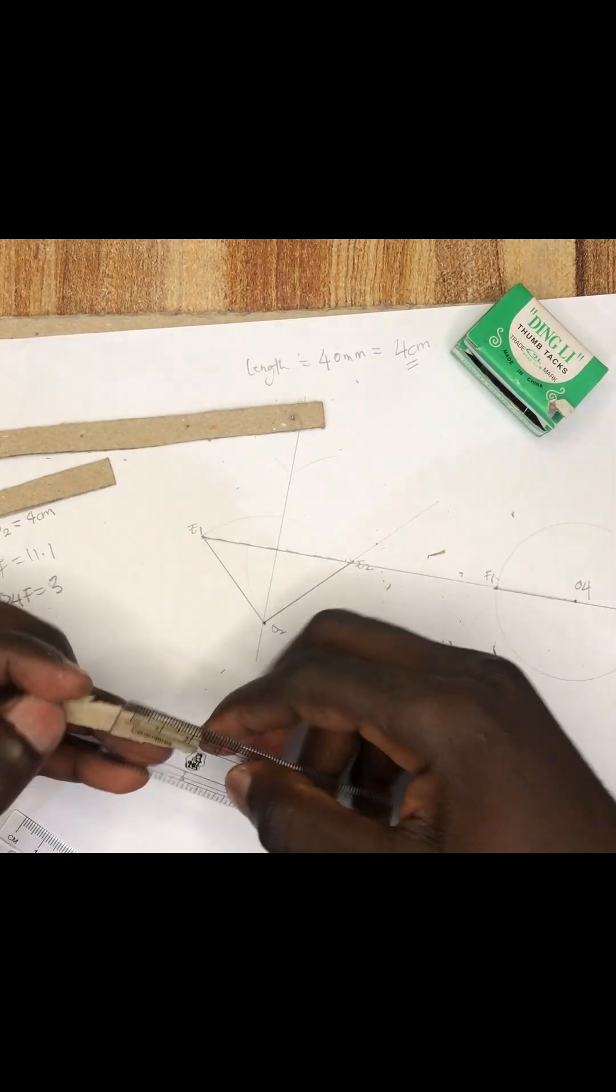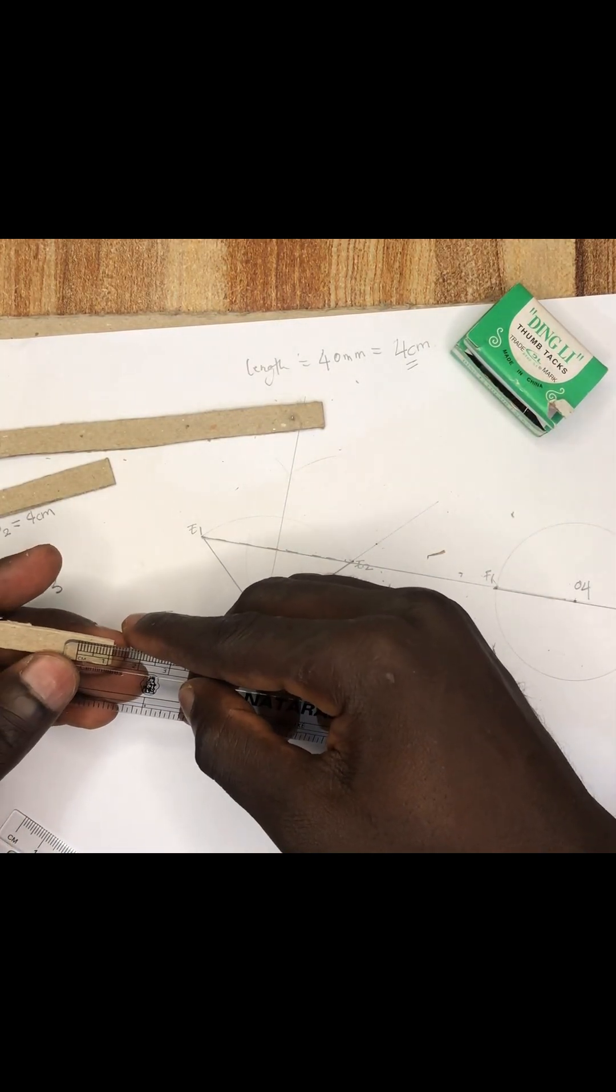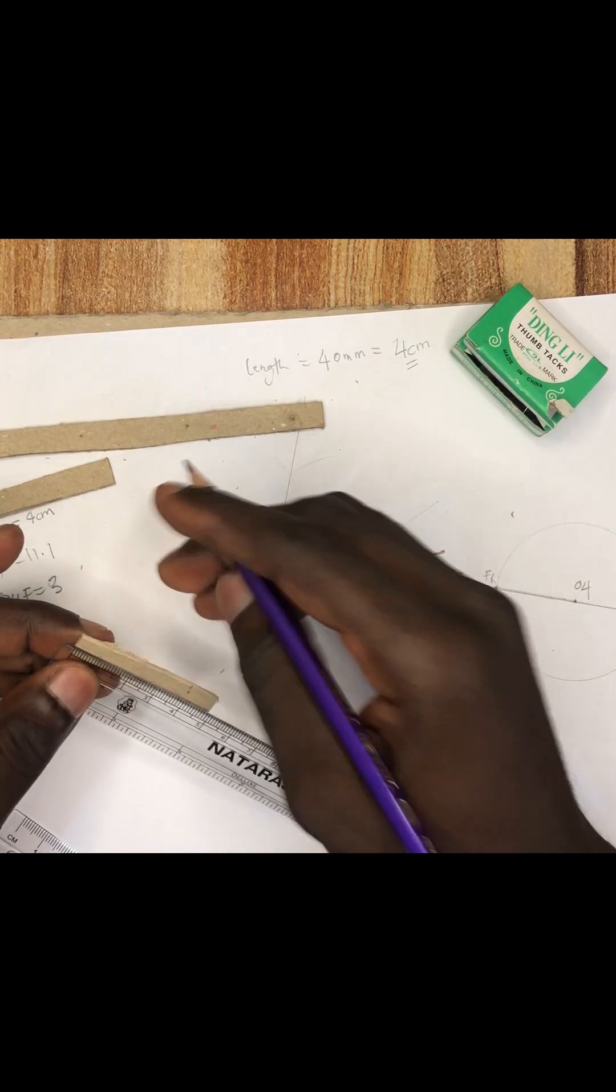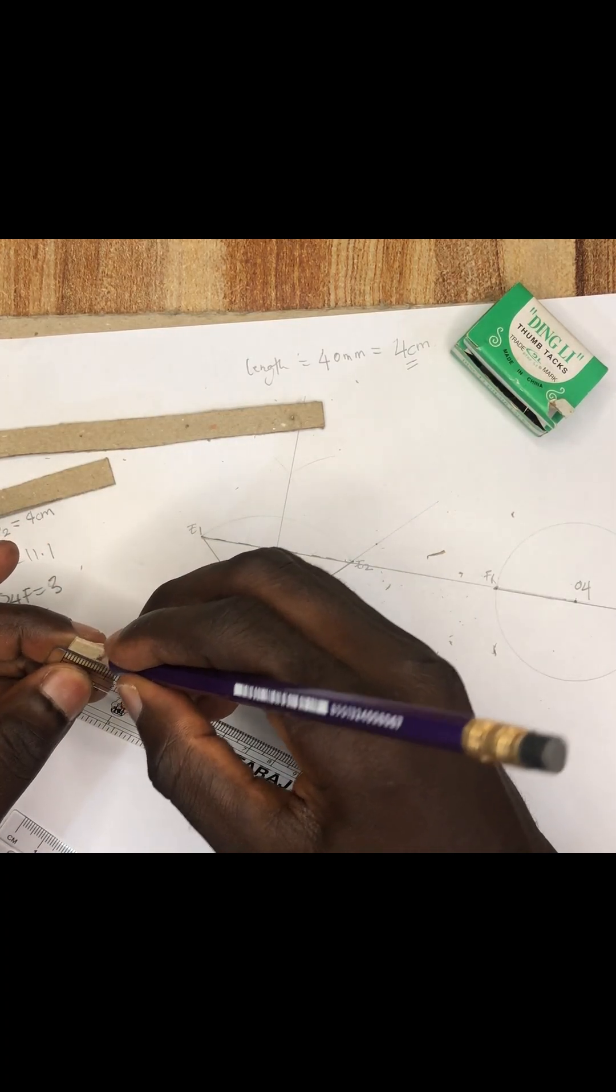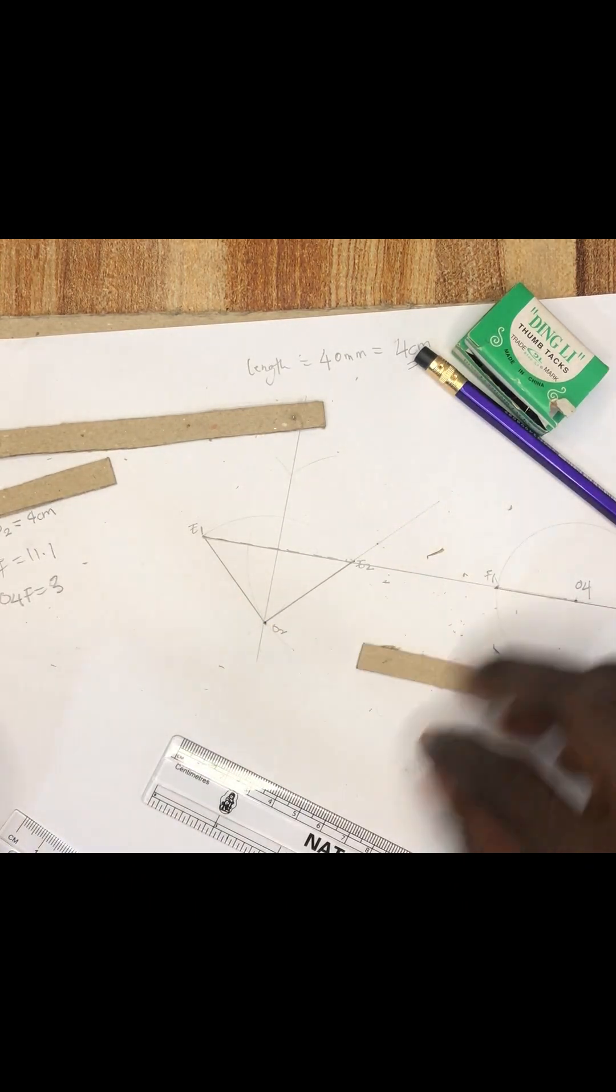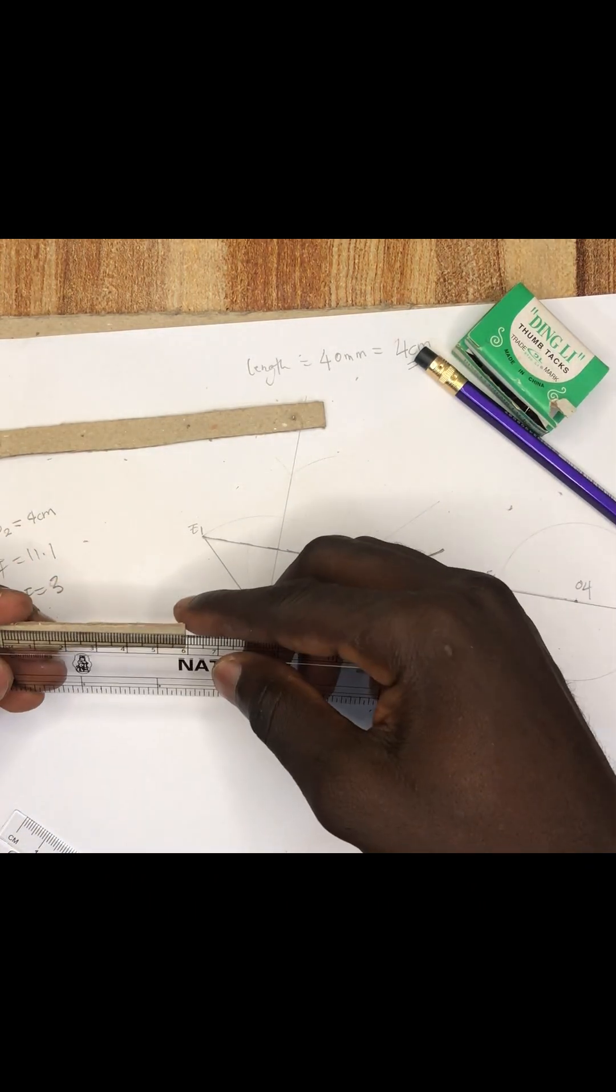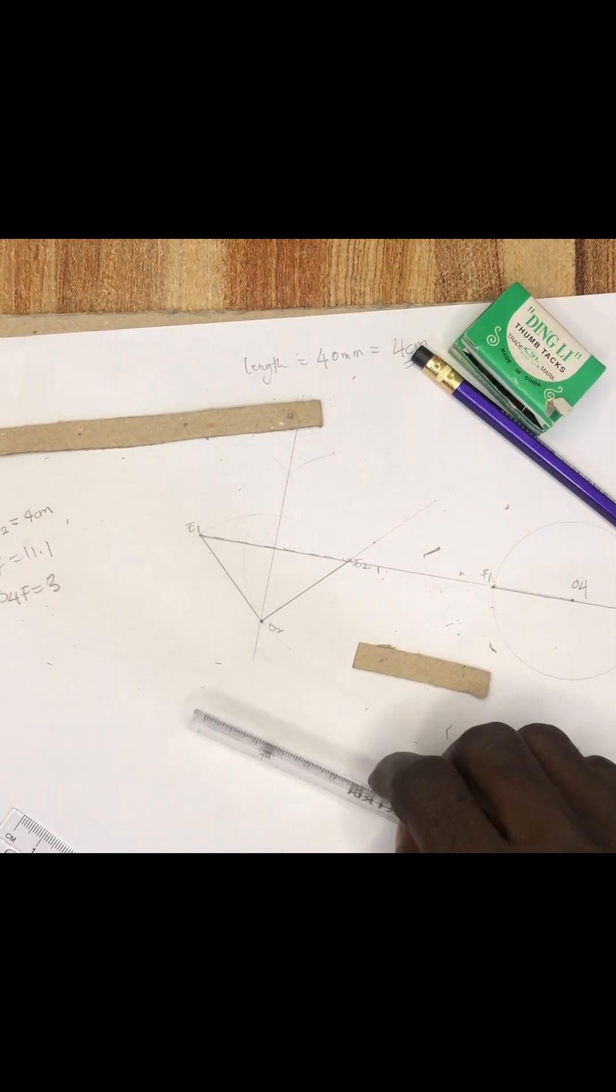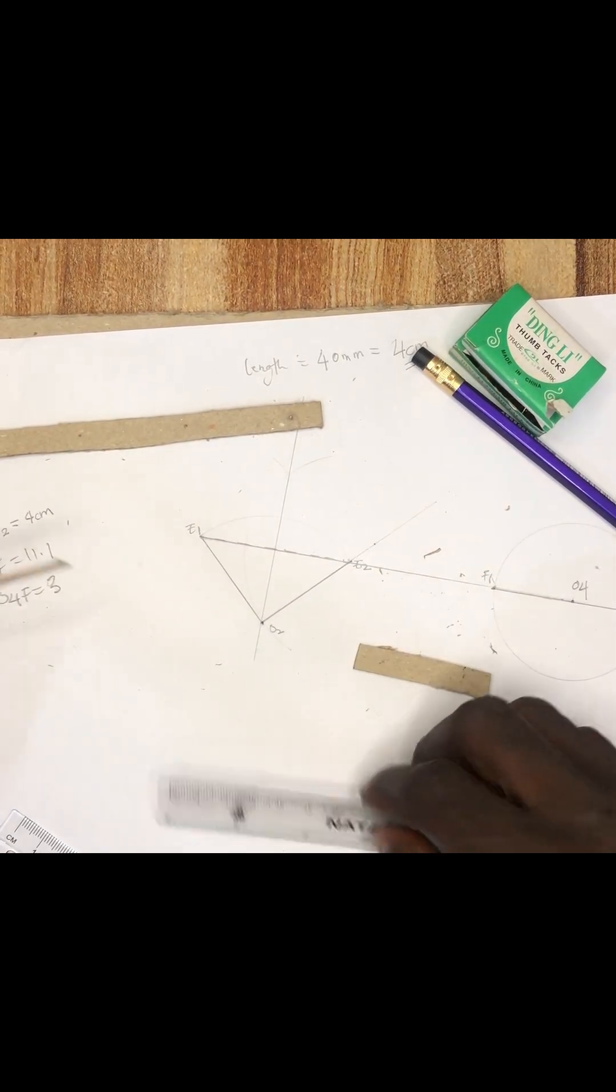And this one too, you measure 1 cm up and then 1 cm here too. So, oh wait, this is the E-U, oh E-O2. So we take this, 1 cm up, 1 cm here too as well. Good.